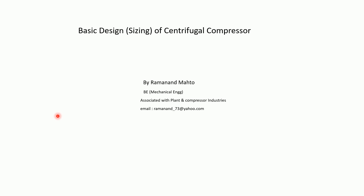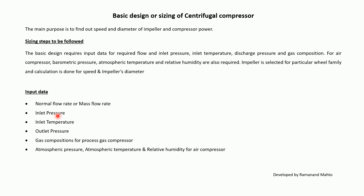Today we'll discuss basic design and sizing of centrifugal compressors. The main purpose of sizing centrifugal compressors is to find out the diameter of the impeller and the power of the compressor. The basic design requires input data for the required flow, inlet pressure, inlet temperature, discharge pressure, and gas composition. For air compressors, barometric pressure, atmospheric temperature, and relative humidity are required. An impeller is selected for a particular wheel family and calculations are done for the speed and diameter.